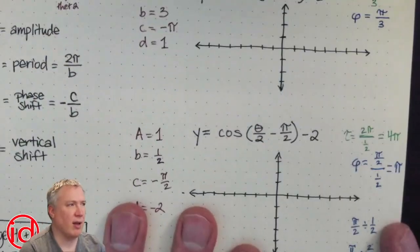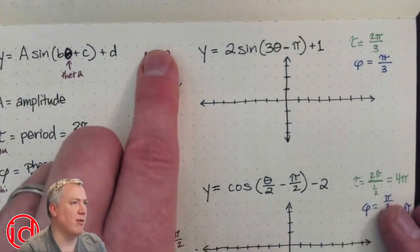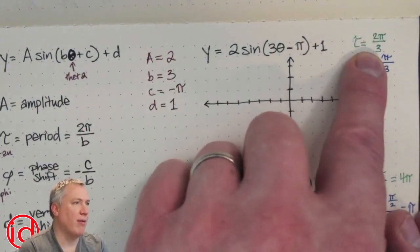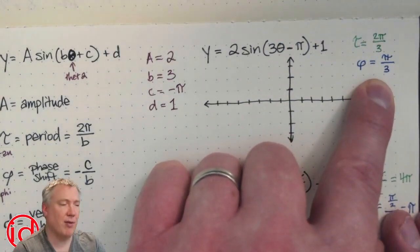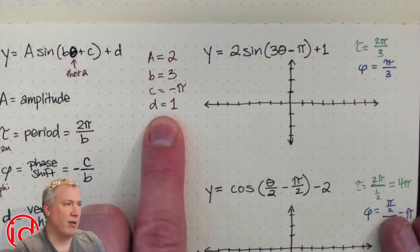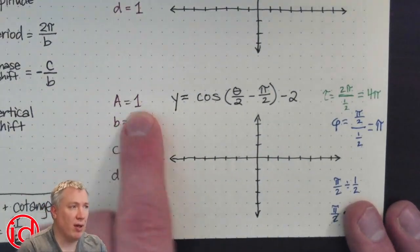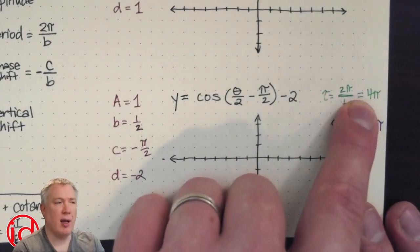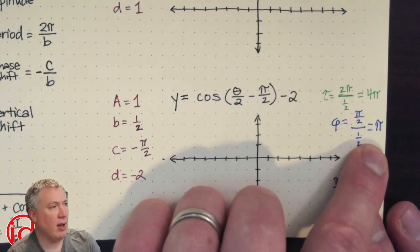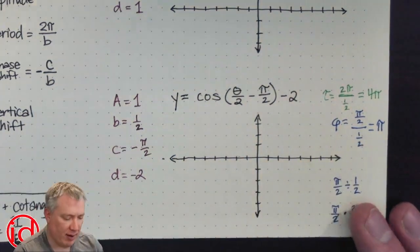So now I have everything. And here I have amplitude of 2, I have a period of 2π over 3, I have a phase shift of π over 3, and I have a vertical shift of 1. And then down here, I have an amplitude of 1, a period of 4π, a phase shift of π, and then a vertical shift of negative 2.